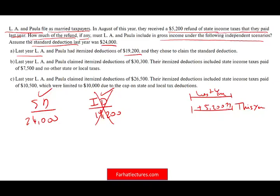Therefore, whatever they paid last year in state taxes did not benefit them. If it did not benefit them, should they include anything from this refund in their taxable income this year? The answer is no. So for Scenario A — none. None of the $5,200 is taxable because they could not itemize, so they did not get a benefit last year. Therefore, they don't include that money in their income.